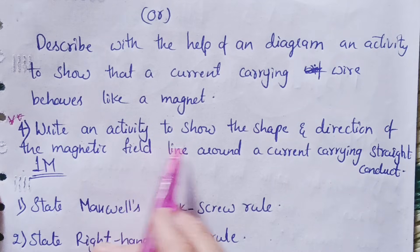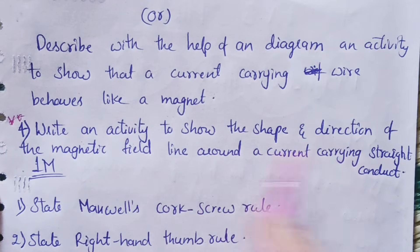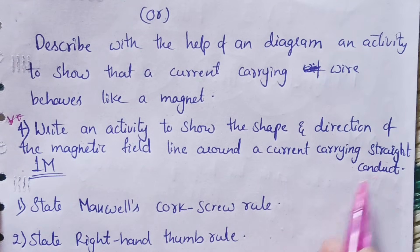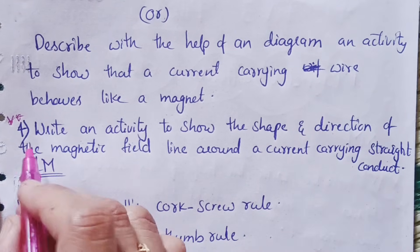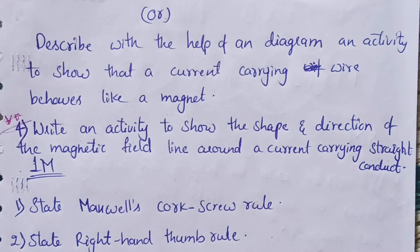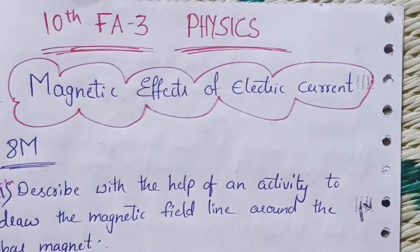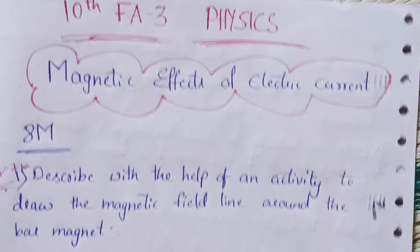The last 8 marks question which is important is this one - mark it as important. Write an activity to show the shape and direction of the magnetic field line around a current carrying straight conductor. This is also important.